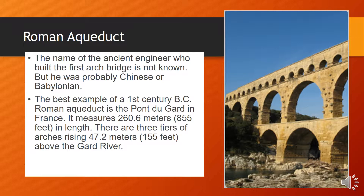Roman Aqueduct. The name of the ancient engineer who built the first arch bridge is not known, but he was probably Chinese or Babylonian. The best example of a first century BC Roman aqueduct is the Pont du Gard in France. It measures 260.6 meters or 855 feet in length, with three tiers of arches rising 47.2 meters or 155 feet above the Gard River.